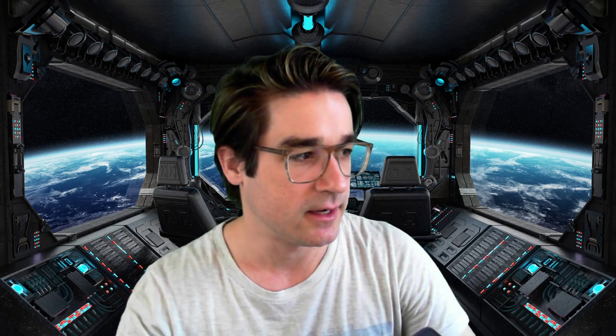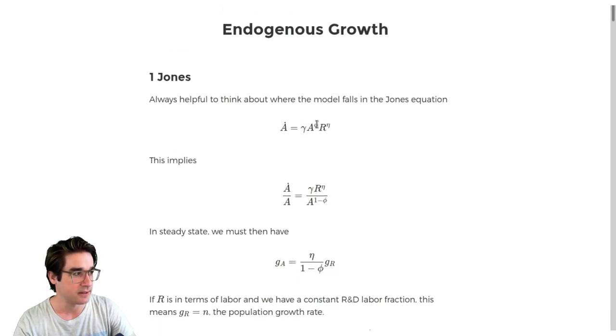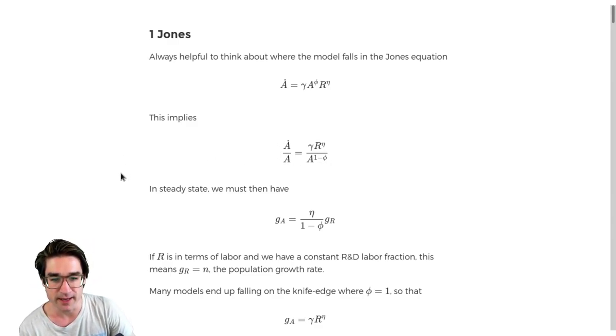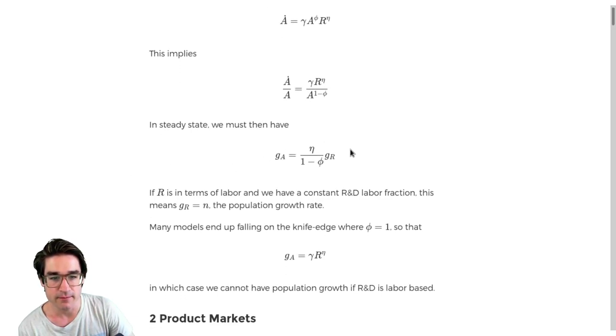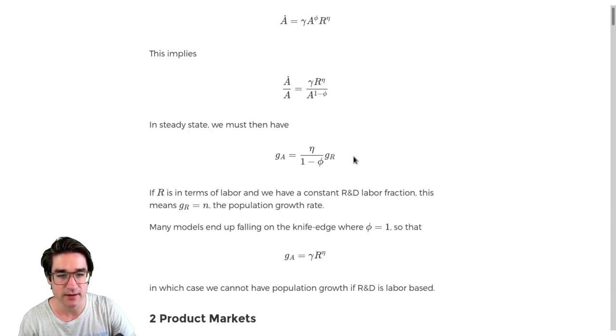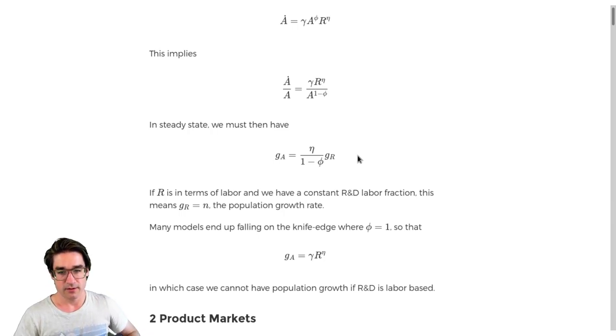That's what's called the first semi-endogenous step, where we say there are no real choices involved, but we at least have a notion of the production function for ideas — taking existing ideas, combining that with research efforts, and producing new ideas. The major implication is that because research gets more difficult over time — you get the low-hanging fruit first — in order to sustain long-run growth, you actually need growth in the inputs to research. So you need population growth to sustain long-run growth.